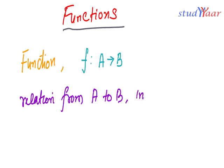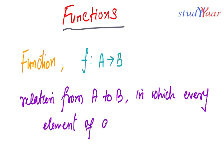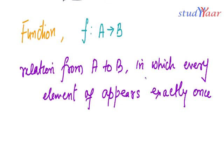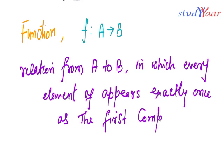In this relation, every element of A appears exactly once as the first component of the ordered pair. Let us understand what this means.